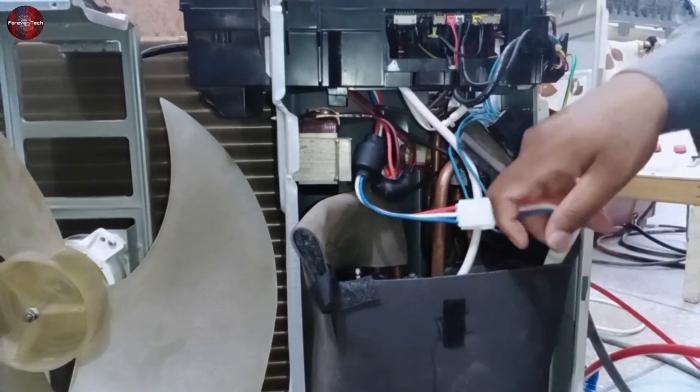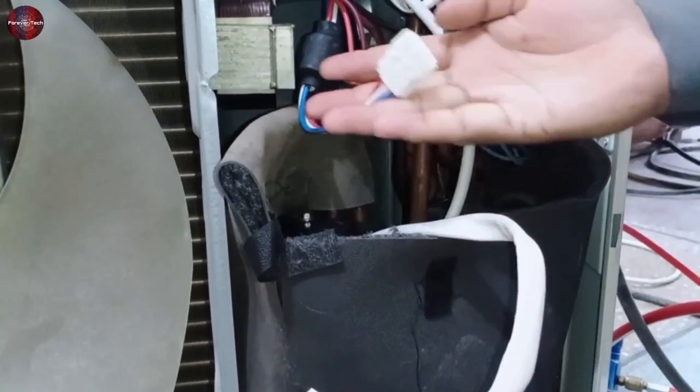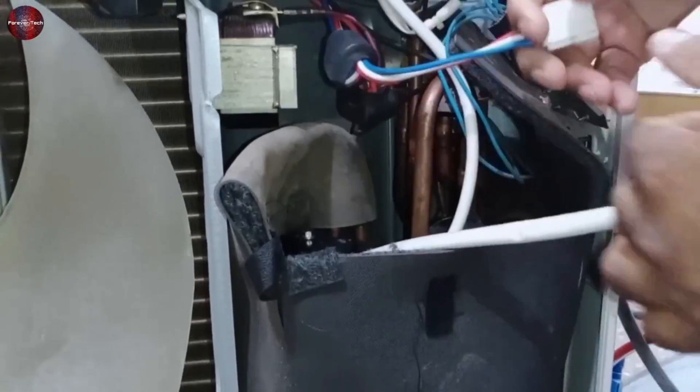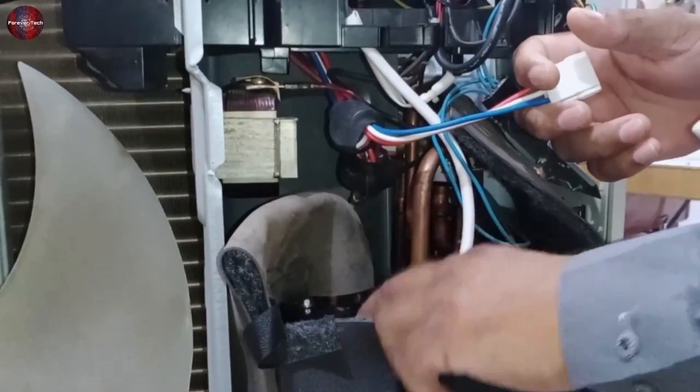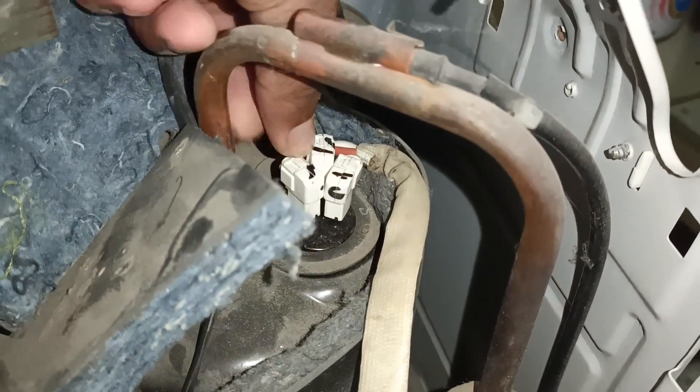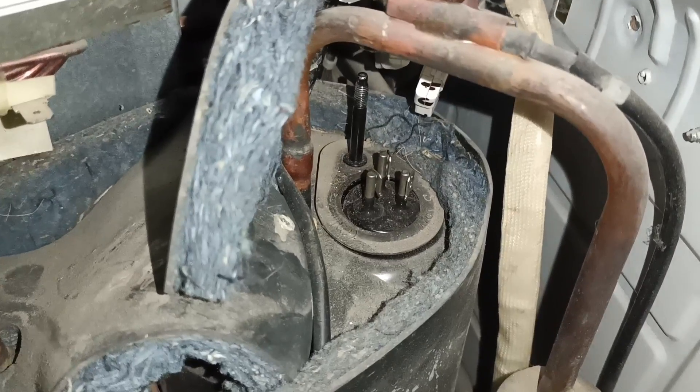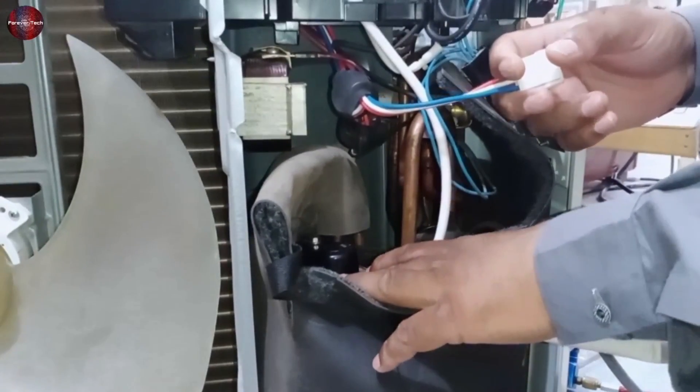Friends, before testing the compressor, you have to disconnect the connector attaching the compressor and the PCB. And in other models, inverter AC PCB has no such connector. The PCB wires are directly attached to the terminals of the compressor. Then you will have to disconnect those wires from the terminals so you can separate the PCB from the compressor.